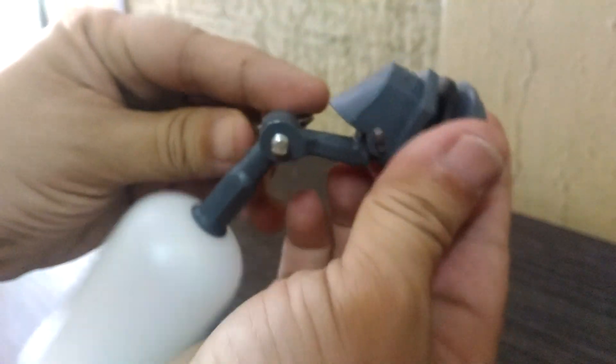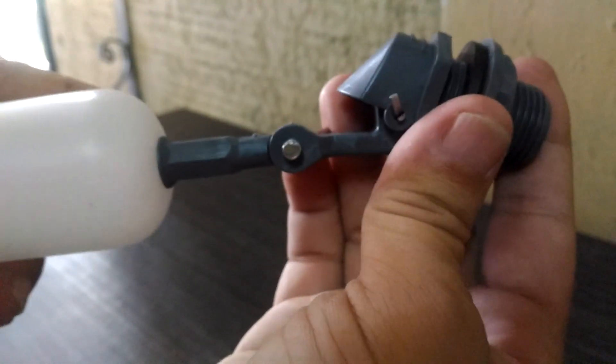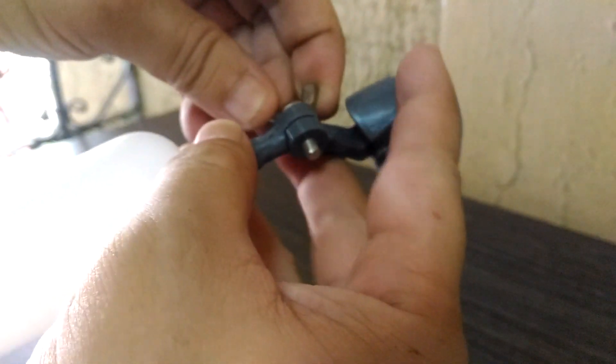It also comes with a pivot point with a wing nut. Loosen the nut to adjust the arm to a desired angle which will control how much water it will allow in before it completely seals the spout.